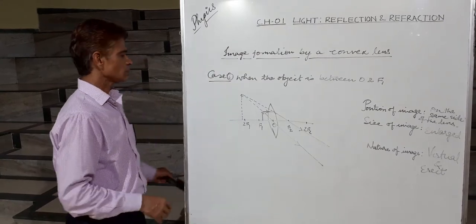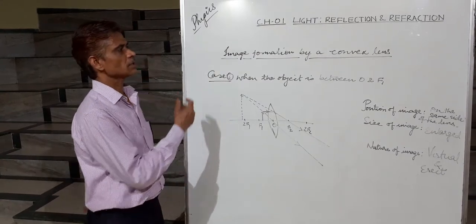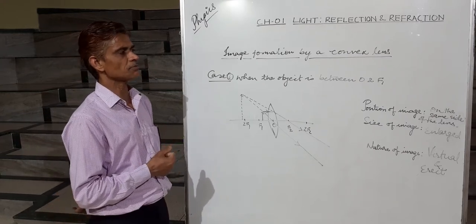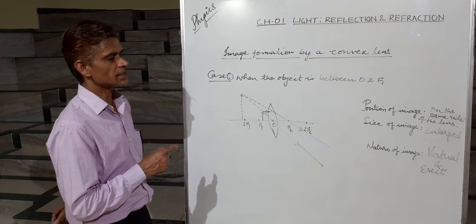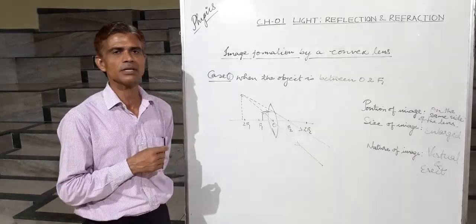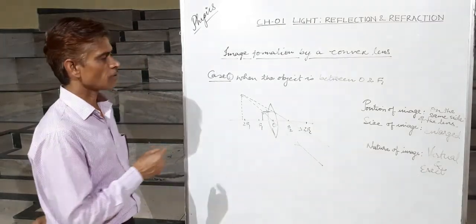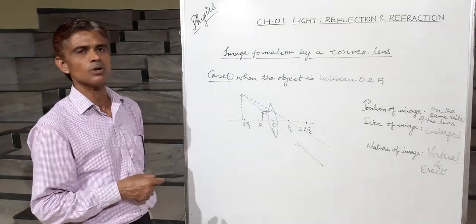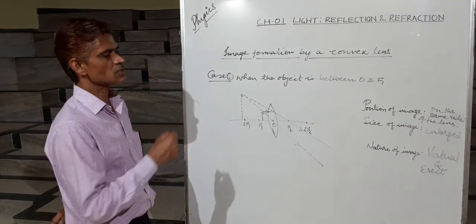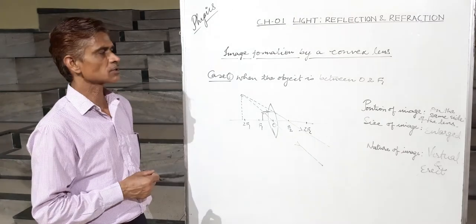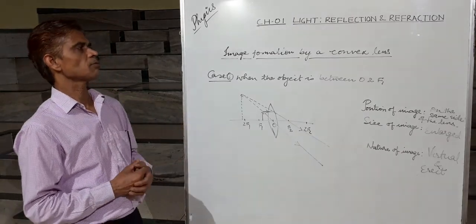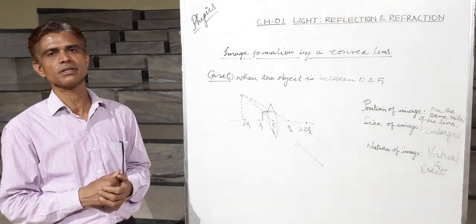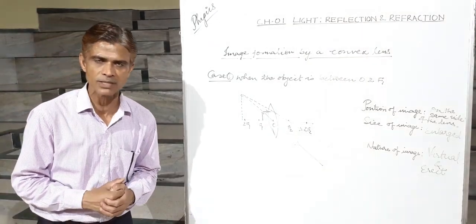Let us summarize the cases of image formation by a convex lens. For five cases we get a real and inverted image, but for one case — when the object is between F1 and O — we get a virtual and erect image. This was all about image formation by a convex lens. Next time we will discuss the image formed by a concave lens. Thank you.